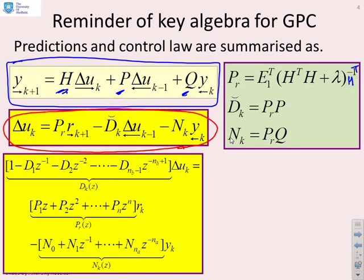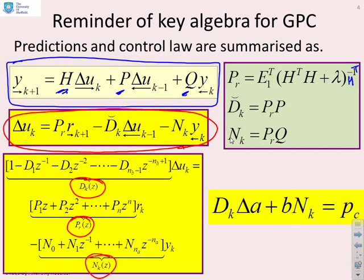You can, if you want, find a Z transform equivalent. And this was covered in the previous video. So you'll see we've got a definition for D_k of z, a definition for P_r of z, a definition for N_k of z. And if you form those Z transforms, then the closed loop polynomial comes from this expression here.